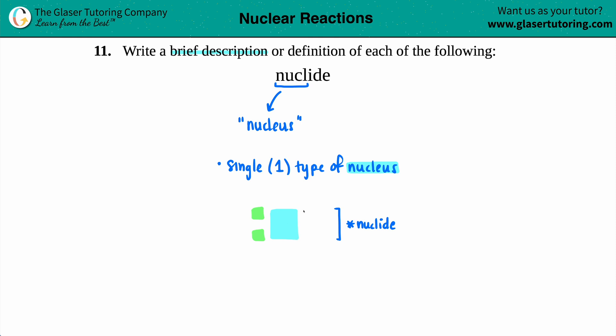But anything else that has subatomic particles in the nucleus will be classified as a nuclide. So if you want to do maybe, we could take it to the extreme. We could talk about maybe a carbon atom.